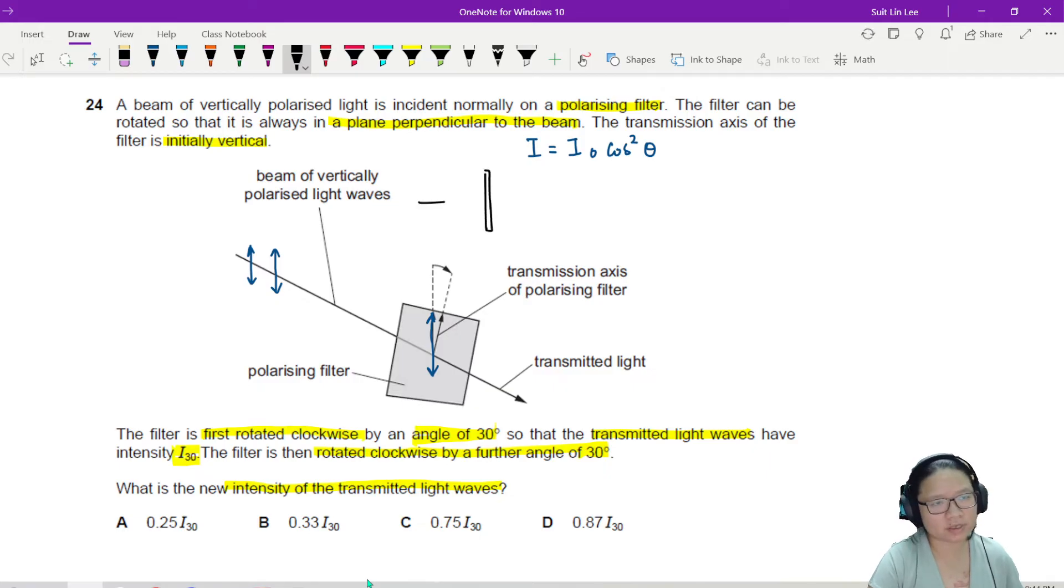This is the filter. This is the light entering. This is the light exiting. So incident is I naught, transmitted is I. You can also call this IT for transmitted so that you're a bit less lost. But most of the books, they will just write I. So incident is I naught, transmitted is IT. This is the side view.